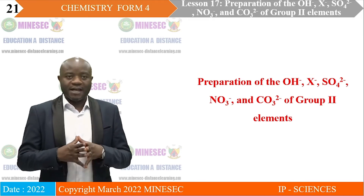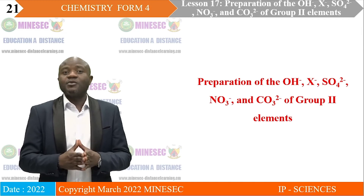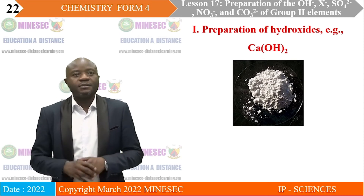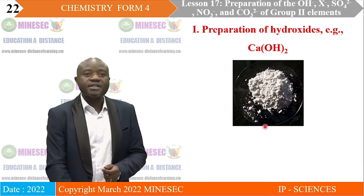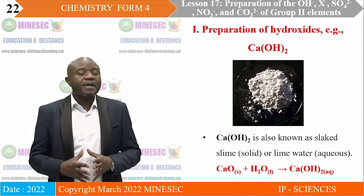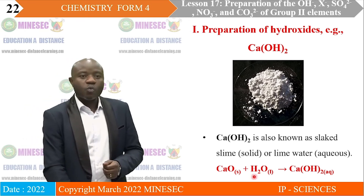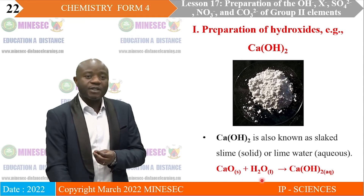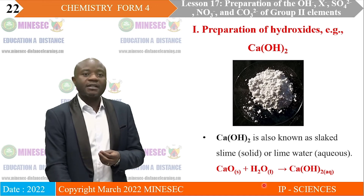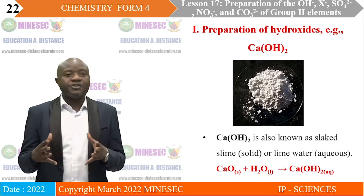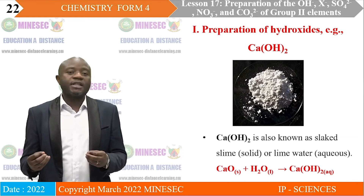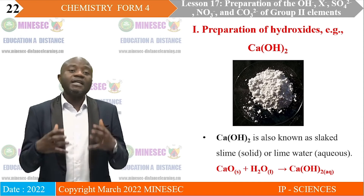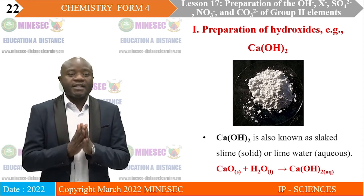Preparation of the hydroxide, halide, sulfate, nitrate, and carbonate of Group 2 elements. One: Preparation of the hydroxide — for example, calcium hydroxide, a white solid. To prepare calcium hydroxide in the laboratory, we dissolve calcium oxide in water — calcium oxide reacts with water to form calcium hydroxide. Calcium hydroxide has two names depending on its state: it is called slaked lime when in the solid state, or lime water when it is dissolved in water.